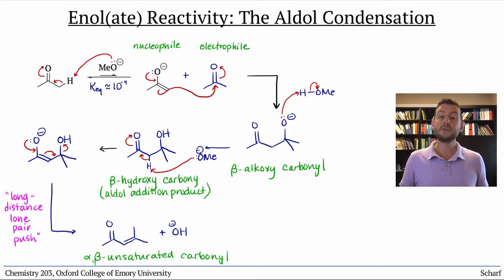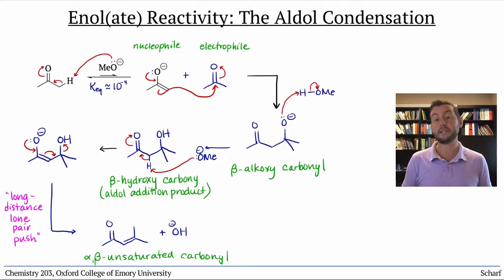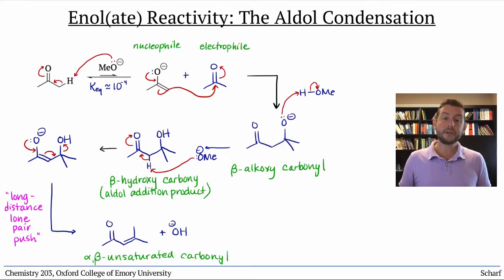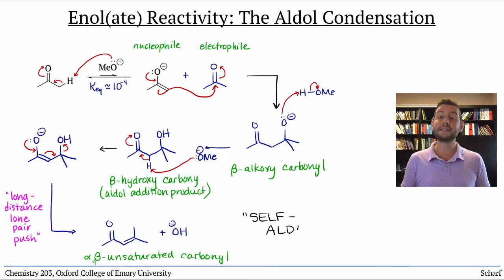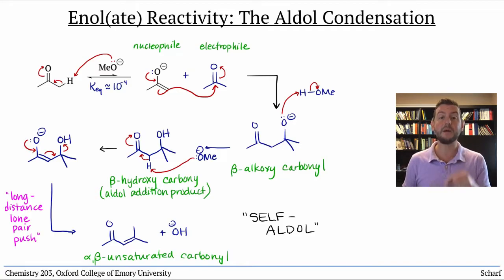This overall reaction — an enolate nucleophile reacting with a ketone or aldehyde to produce an alpha-beta-unsaturated carbonyl compound — is called the aldol condensation. The aldol reaction we've just shown is referred to as a self-aldol, in which the nucleophilic enolate is derived directly from the electrophilic carbonyl.